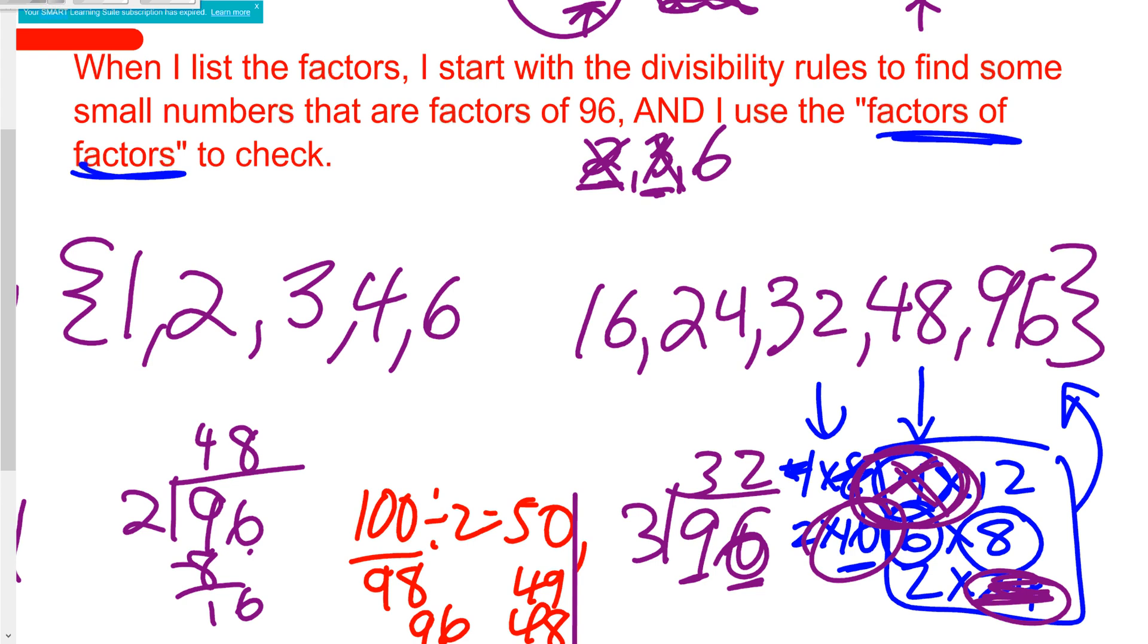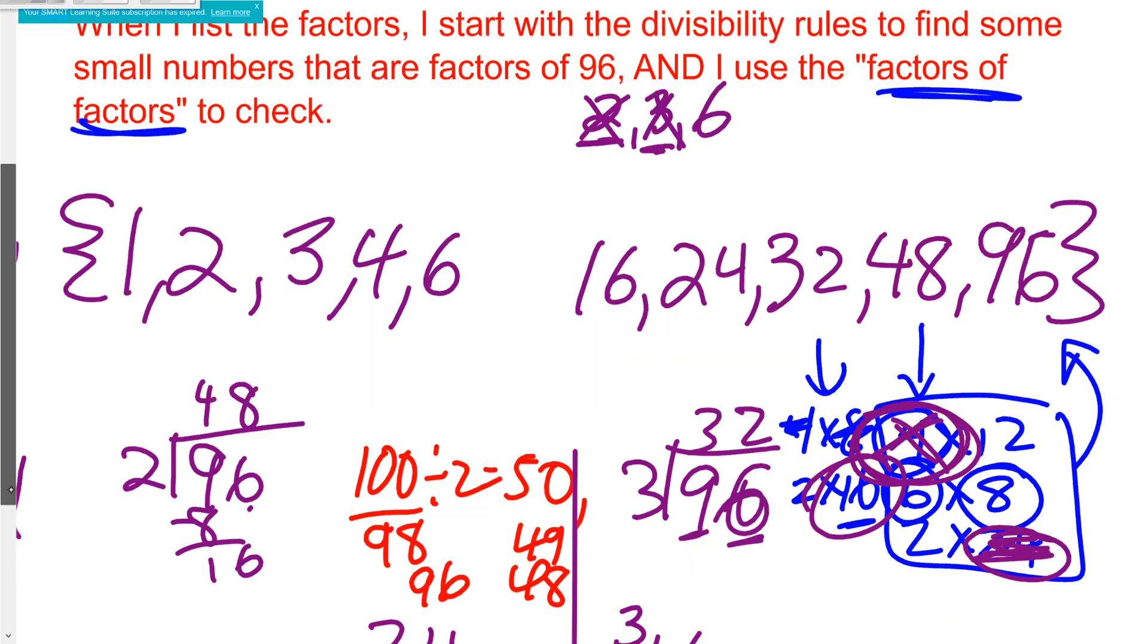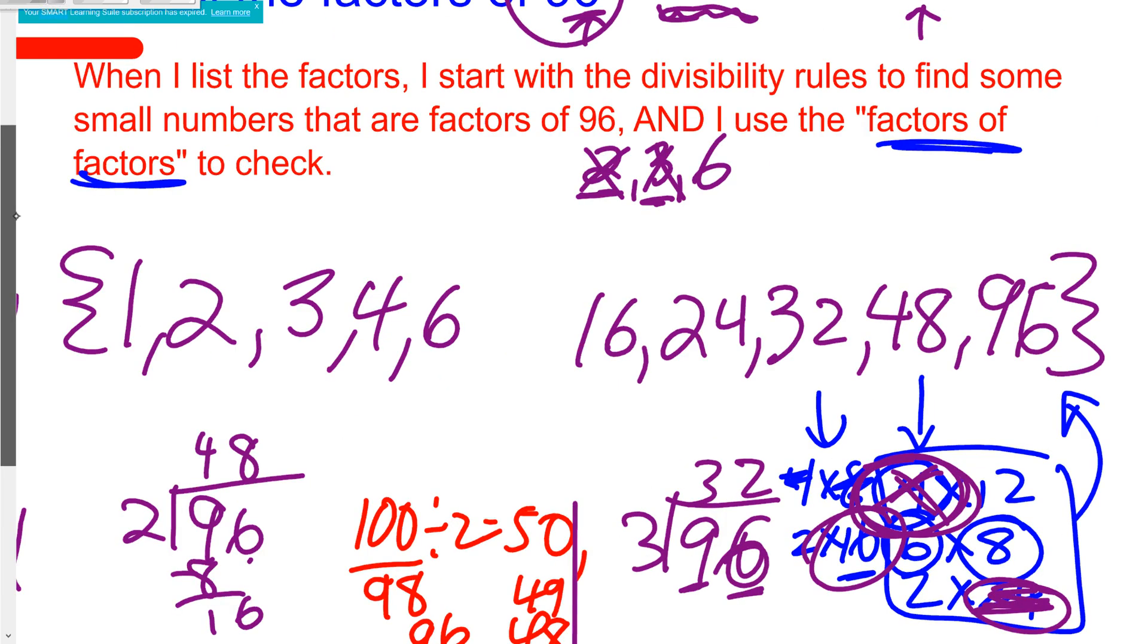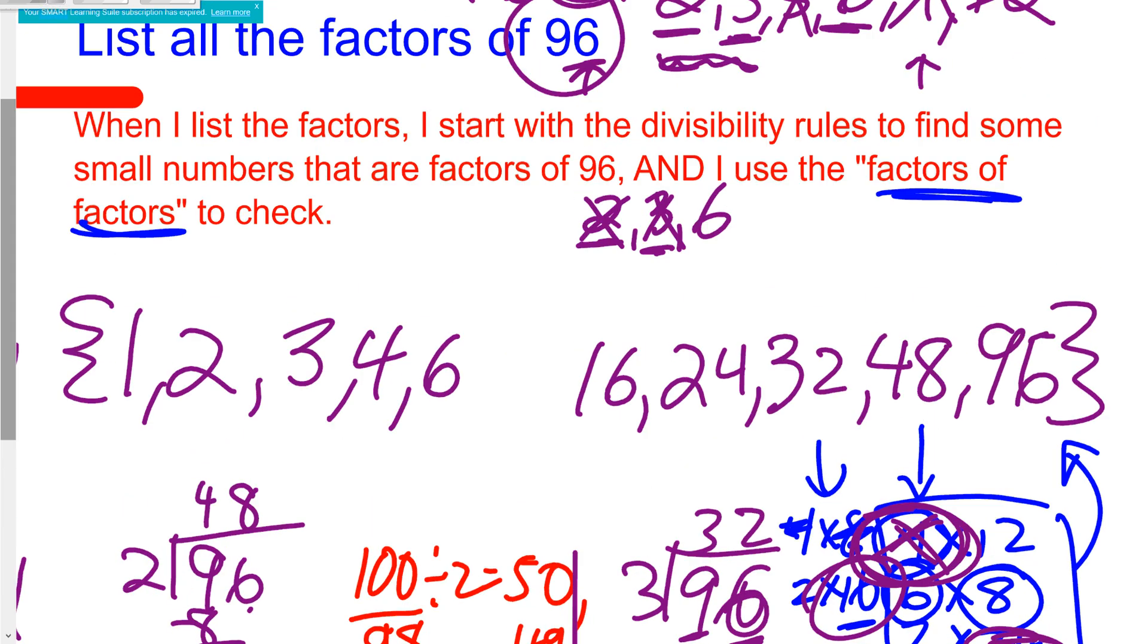So then I have to start thinking about 7 because 7 is what comes next. Now I don't have a divisibility rule for that, but I do know 7 times 12 is 84, so that means 7 times 13 is 91, which a lot of times I remember because that's a composite number. And that means 7 times 14 is 98, which means 7 is not going to go into 96.